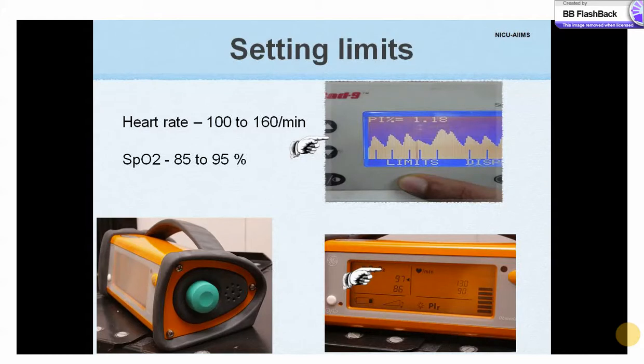Setting alarm limits is an important aspect of monitoring. In neonates, we usually set the saturation between 85 to 95 percent and pulse rate between 100 to 160 per minute. Limits can be set using these buttons or these knobs at the sides to choose the appropriate component and set as per the clinical needs.